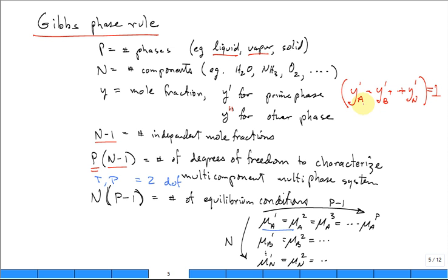Now we know that if I add the mole fraction of component A plus B plus all the components, they have to be 1. So there's really only N minus 1 independent mole fractions because the sum over all of them has to equal 1. So if there's N minus 1 independent mole fractions for each phase, you multiply the number of phases times N minus 1 to get the total number of degrees of freedom to characterize the multi-component, multi-phase system.